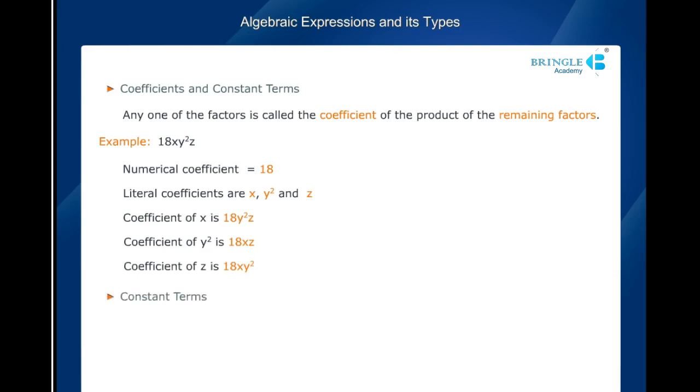Constant terms: A term of the expression consisting of no literal factors is called the constant term. For example, in the expression p - 3q + 9, the constant term is 9.